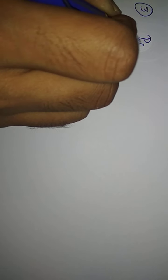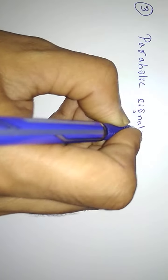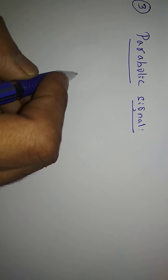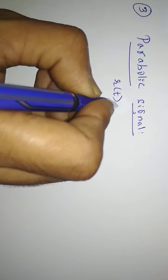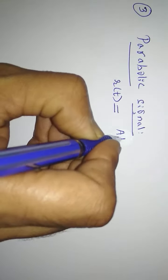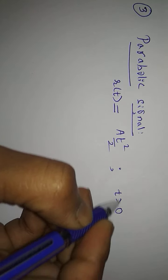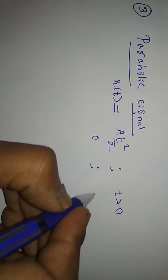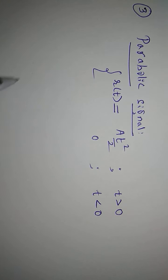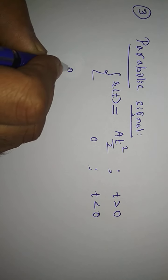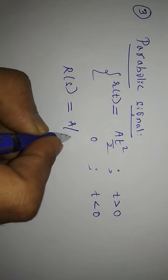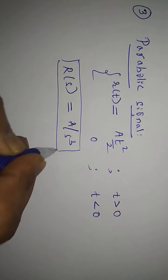Moving on further, we consider the third standard test signal, the parabolic signal. The parabolic signal R(t) is equal to A·t² divided by 2 for t greater than zero, and R(t) = 0 for t less than zero. The Laplace transform R(s) is equal to A divided by s cubed.